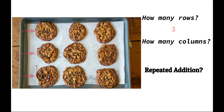There are my rows. I have one, two, three rows. I want you to think about those as groups — one group, two groups, three groups. Now let's look at the columns, which will tell me how many are in each group. I have one, two, three columns. That means that I have three cookies in each row or in each group.